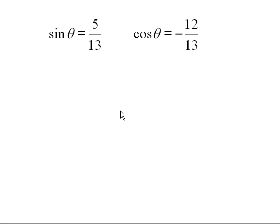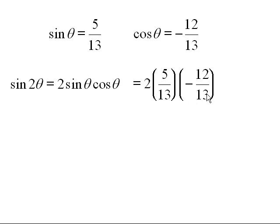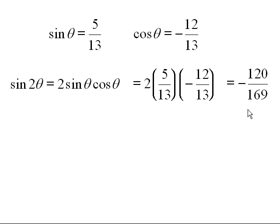Now we plug into the formulas. Sine two theta equals two sine theta cosine theta. Plugging in five thirteenths and minus twelve thirteenths: two times five times twelve is one hundred twenty, thirteen squared is one hundred sixty-nine, and there's a minus sign. So sine two theta equals minus one hundred twenty over one hundred sixty-nine.